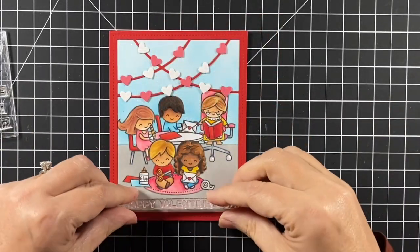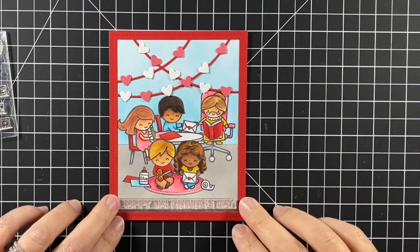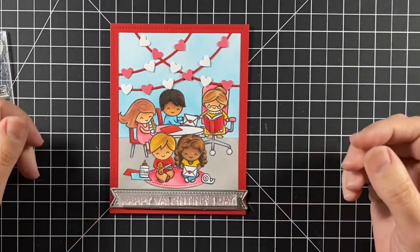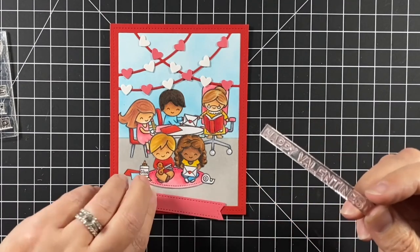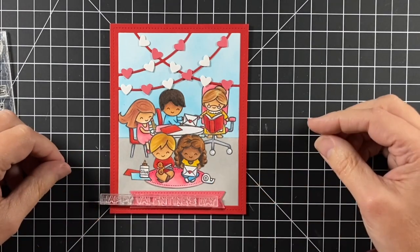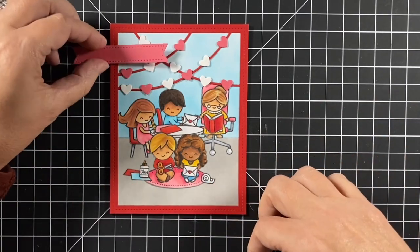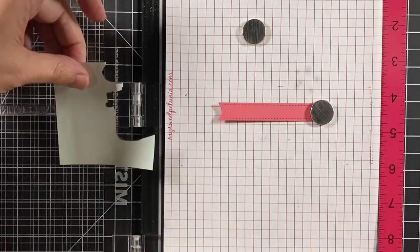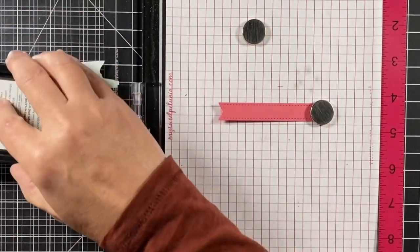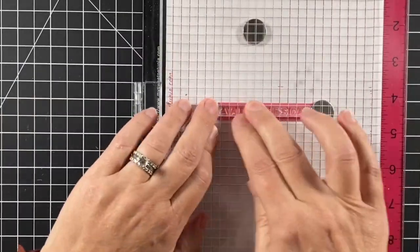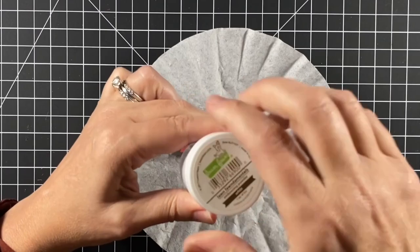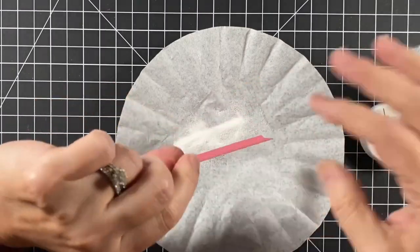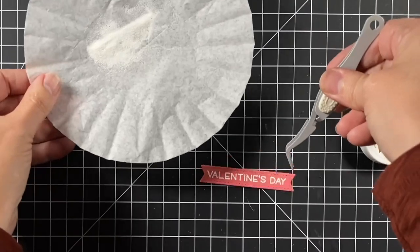Now to decide about the sentiment. This is from Simply Celebrate Hearts. I cut that banner twice, cut it out of guava cardstock. I'm going to heat emboss the sentiment in white using clear ink. I masked the happy part so it just says Valentine's Day. I'm using my white embossing powder from Lawn Fawn and I will melt that with my heat tool.